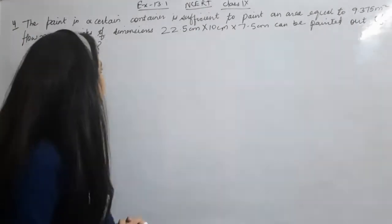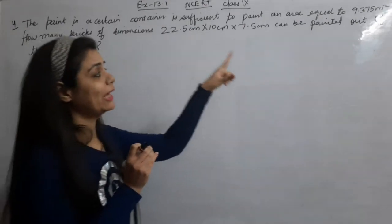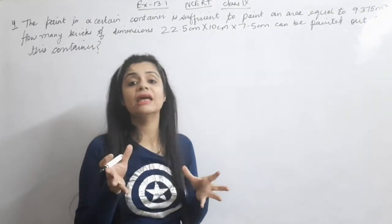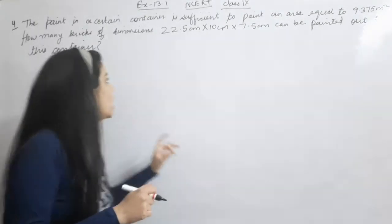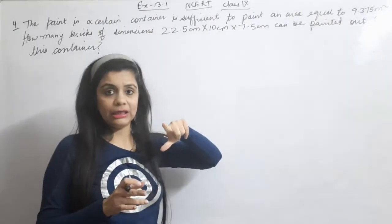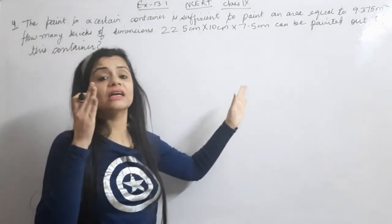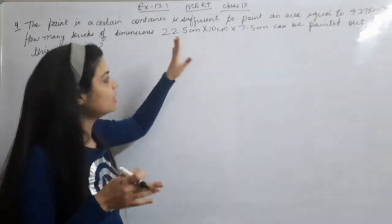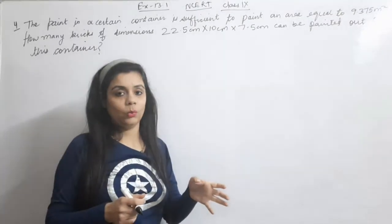Moving on to the next question — Question 4: the paint in a certain container is sufficient to paint an area equal to 9.375 meter square. How many bricks of given dimensions — length, breadth, height — can we paint from that paint which is in the container?